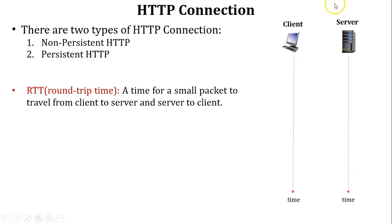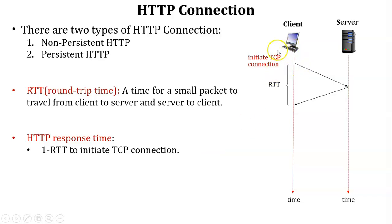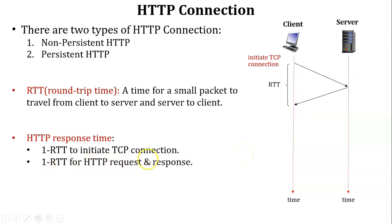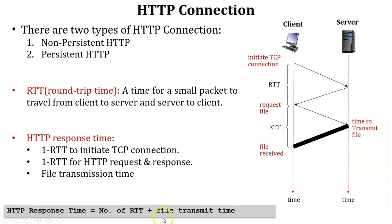Let us discuss RTT using a diagram. There is one client and one server. A small packet travels from client to server and server to client — that is one RTT. To calculate HTTP response time, we need one RTT to initiate the TCP connection, and one RTT for the HTTP request and first response. The last parameter is file transmission time. So the HTTP response time equals 2 RTT plus file transmit time.